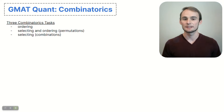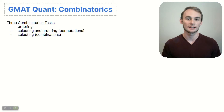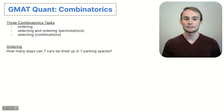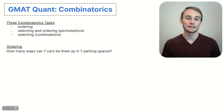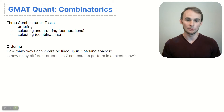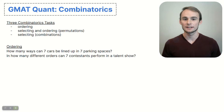Here are some examples of what each of these three tasks might look like. A basic ordering question might ask you how many ways seven cars can be lined up, or in how many different orders seven contestants in a talent show can compete.